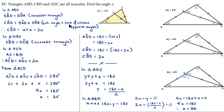This angle is an exterior angle for triangle ABD — the line CBA is a straight line, making CBD an exterior angle. So the exterior angle equals the sum of the two interior opposite angles. Since both those angles are X, their sum is 2X, meaning angle CBD equals 2X.